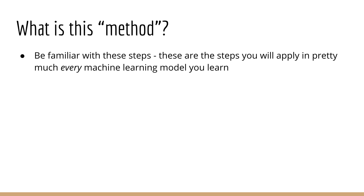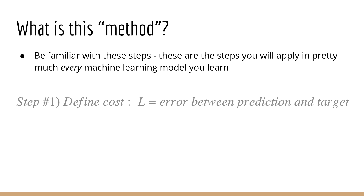So what is this method that we use to train linear regression and logistic regression? Let's recap the steps. If you're new to machine learning, you want to be very familiar with these steps, since these are the steps you will follow in pretty much every machine learning model you learn about. Step number one is to define a loss function, also known as a cost function or an objective function.